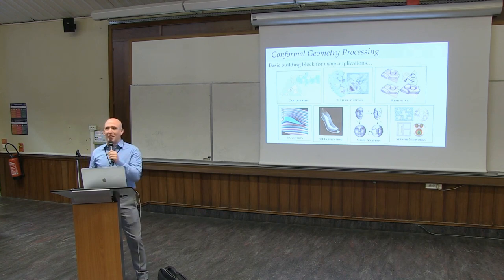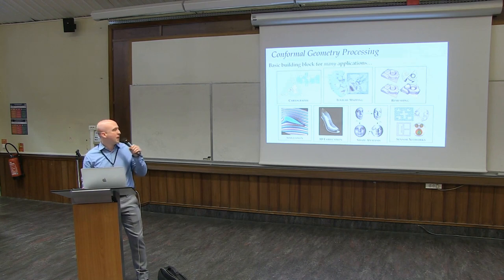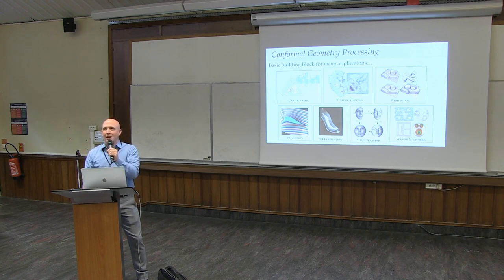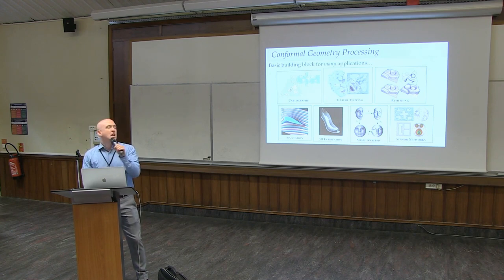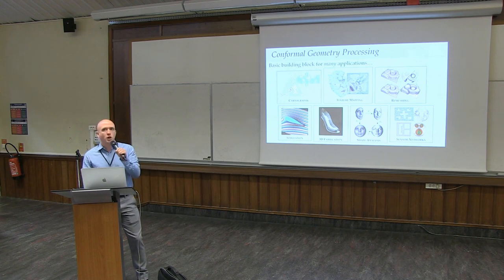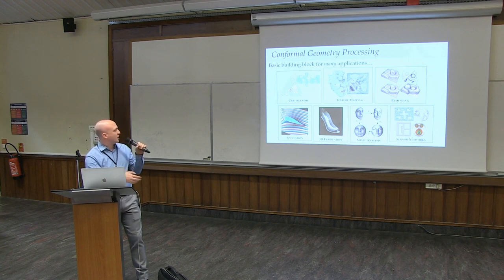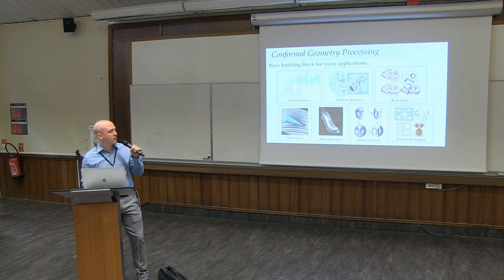The oldest application of conformal geometry was making maps of the earth — cartography. You want to navigate the globe, but the globe is round and you want a flat map. In computer graphics, when you hear the word conformal, you think texture mapping — mapping an image onto a bunny. That's certainly one thing people still do, but the use of conformal geometry has grown a lot since the late 1990s and early 2000s to simulation, 3D fabrication, shape analysis, and even laying out sensor networks.